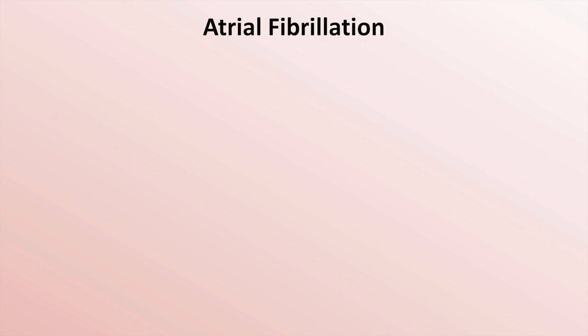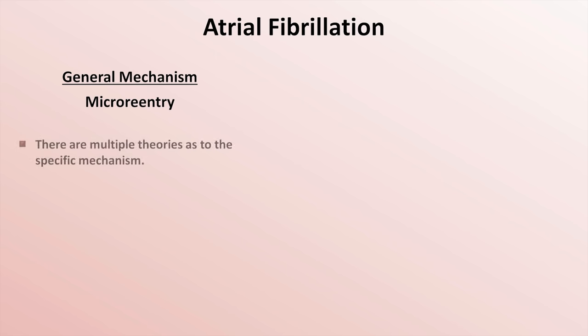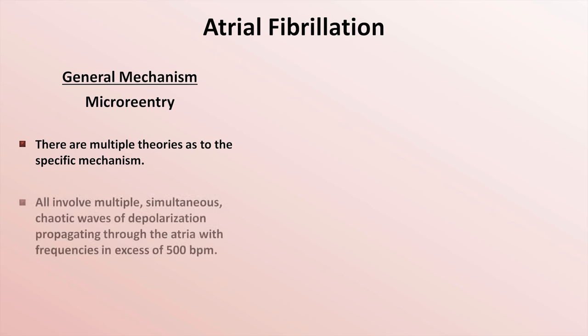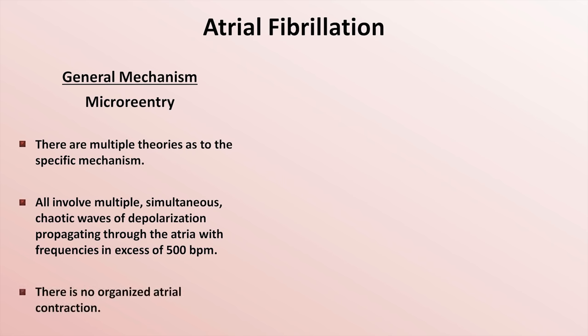The next rhythm is atrial fibrillation, usually abbreviated AFib. The general mechanism is something called micro-reentry, though the details are still debated. All theories invoke multiple simultaneous chaotic waves of depolarization propagating through the atria with frequencies in excess of 500 beats a minute, with only a fraction of those impulses passing through the AV node to depolarize the ventricles. As a consequence, there is no organized atrial contraction.